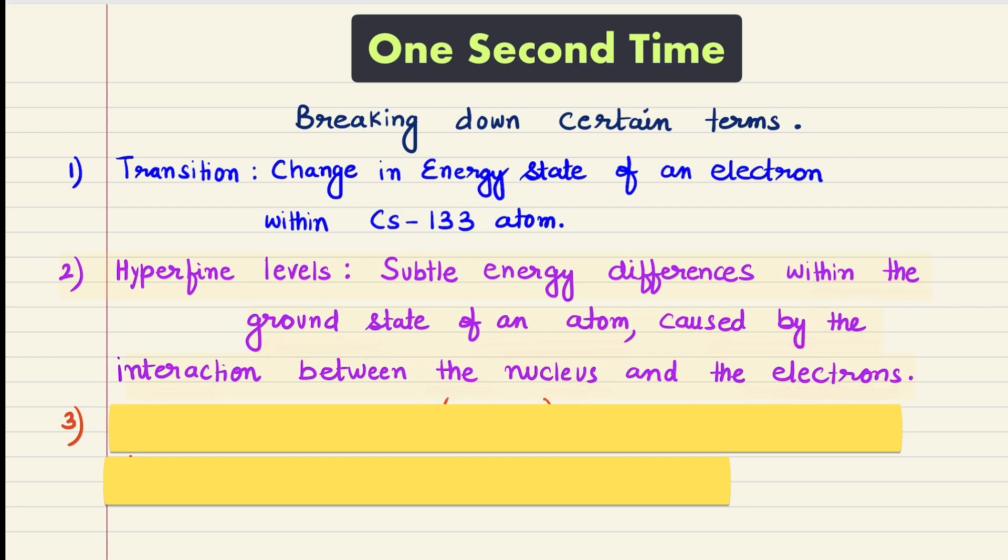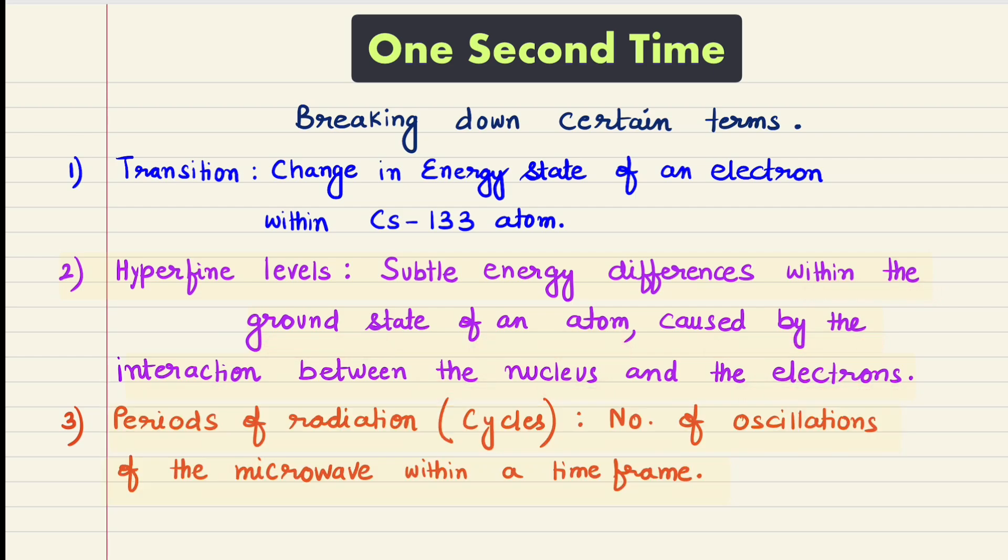At number three, we are going to define periods of radiation, also called cycles. The number of oscillations of the microwave within a limited time frame is referred to as the period of radiation or the cycle.